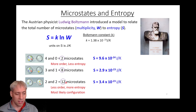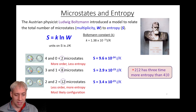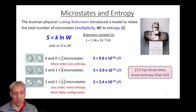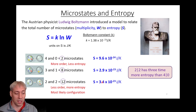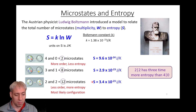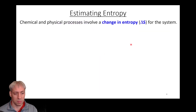We can actually do the calculation — we can plug those numbers in and get an entropy number. The two-microstate arrangement gives 3.4 × 10⁻²³, and the twelve-microstate arrangement gives 9.6 × 10⁻²³. Not only does the latter have more entropy, but it has three times more entropy, and it is more likely to occur. This one is the least ordered, and this one is the most ordered of those possibilities.